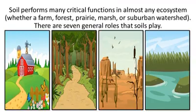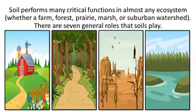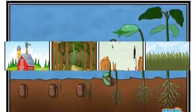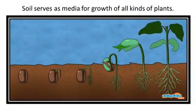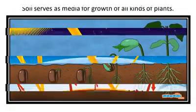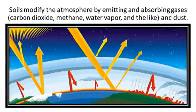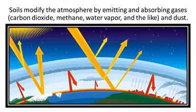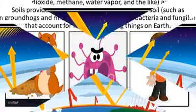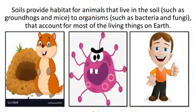Soil performs many critical functions in almost any ecosystem, whether a farm, forest, prairie, marsh, or suburban watershed. There are seven general roles that soils play. Soil serves as media for growth of all kinds of plants. Soils modify the atmosphere by emitting and absorbing gases — carbon dioxide, methane, water vapor, and the like — and dust.